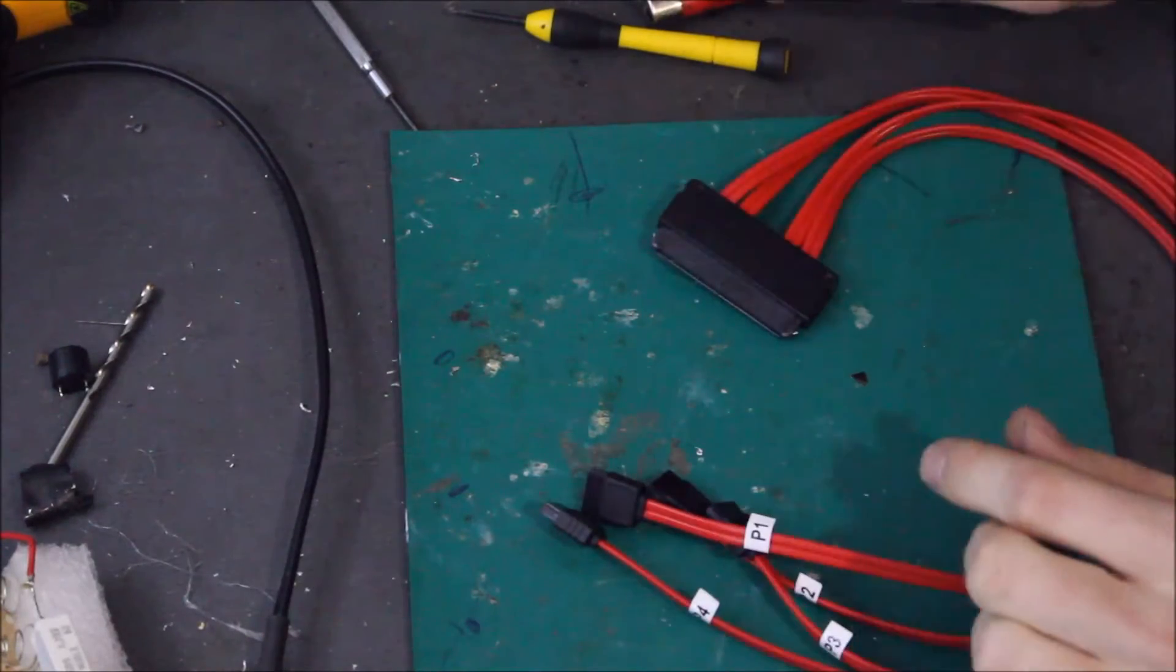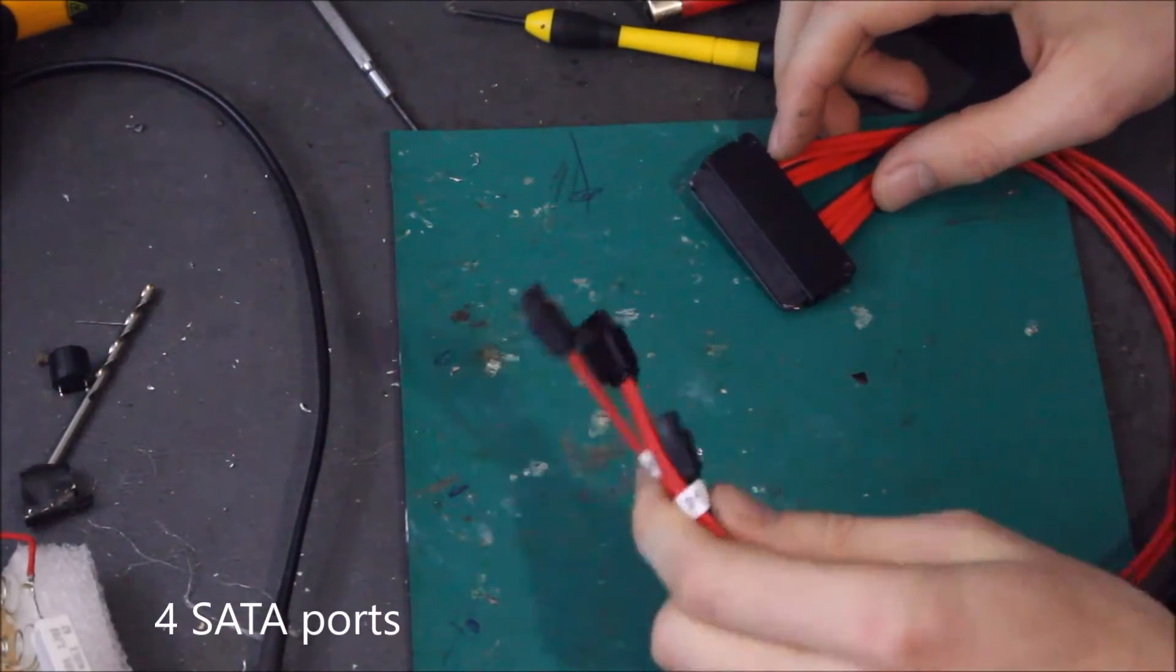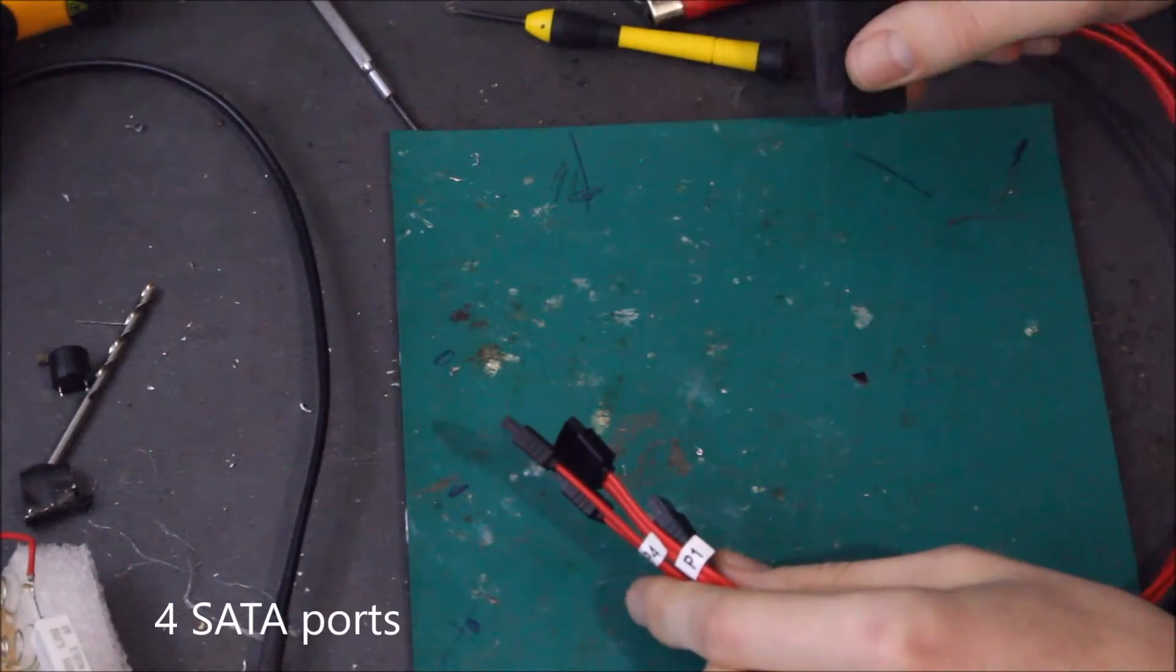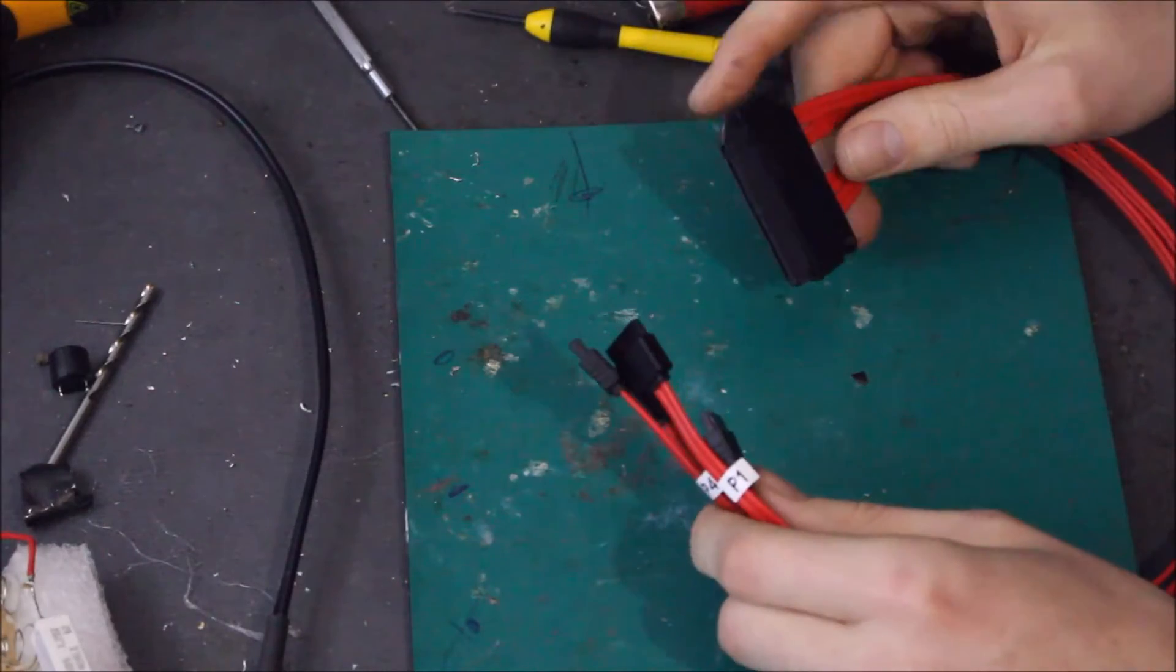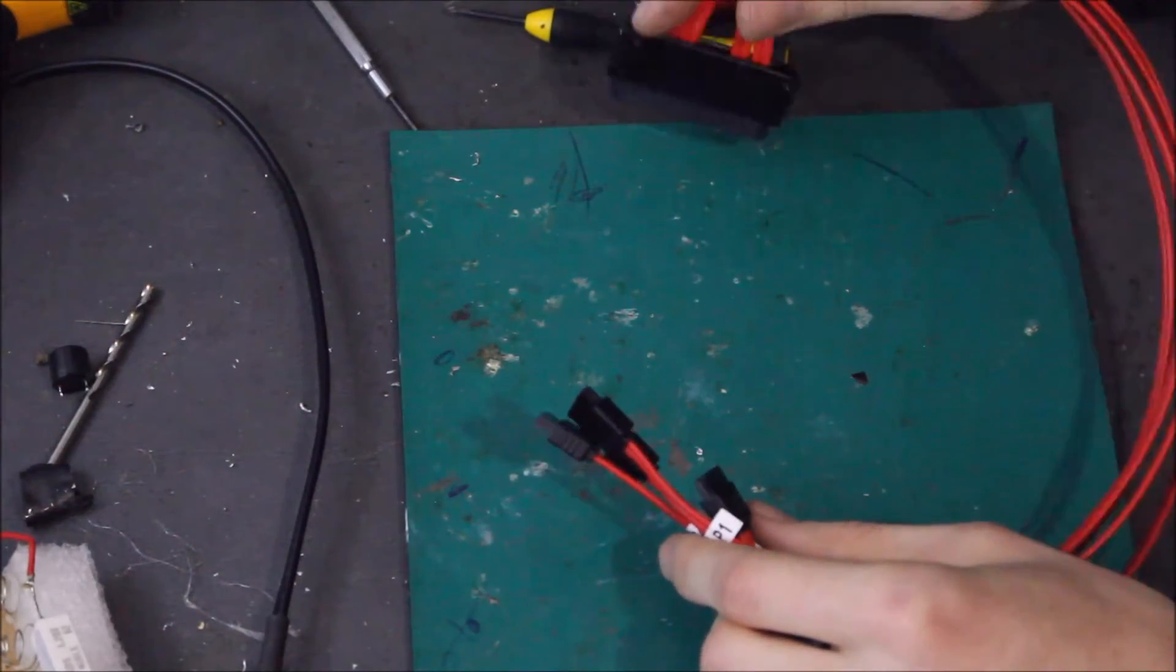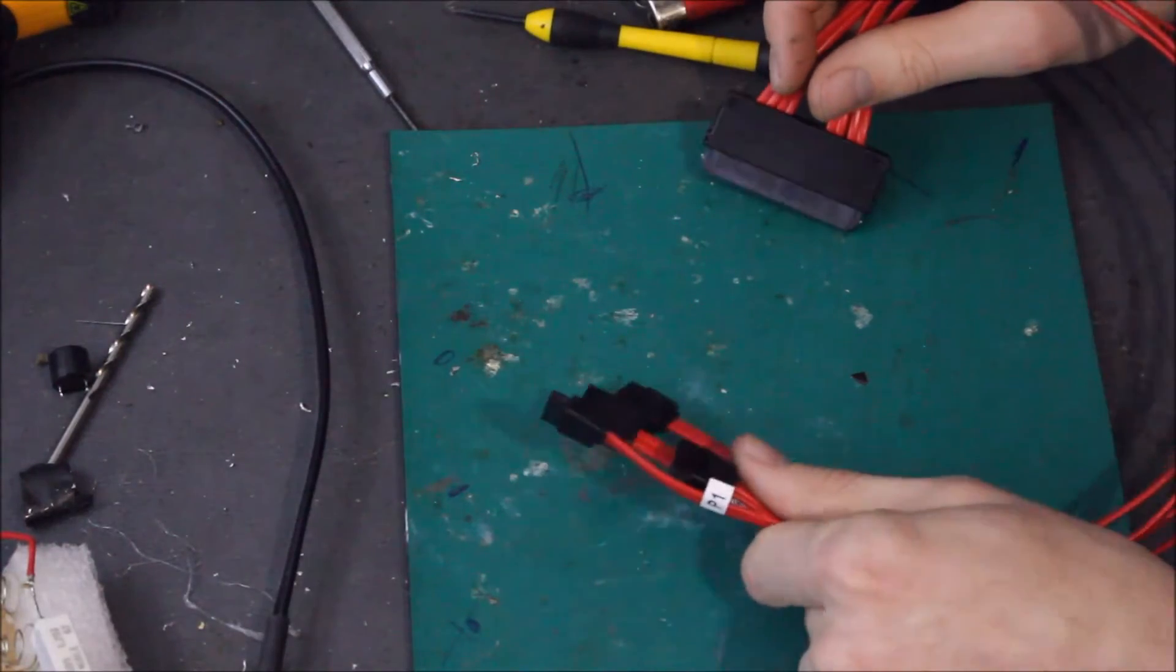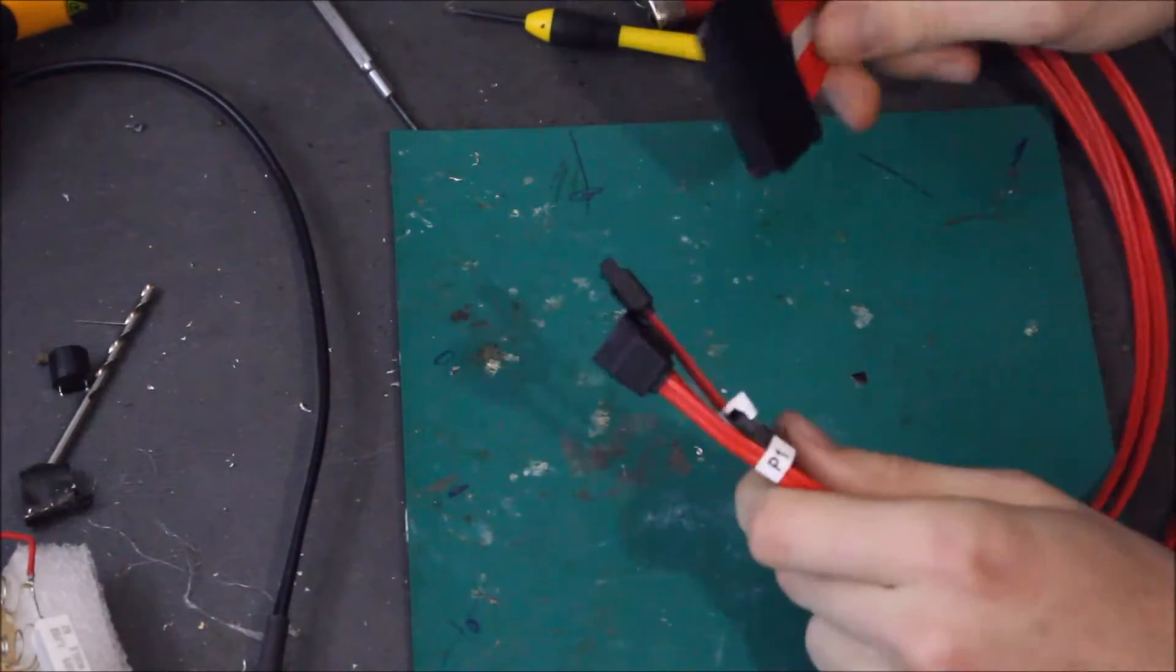The one I currently have is to go from SATA ports on, say, a motherboard into a backplane of some description that uses this connector. But what I'm trying to use it for is to put this onto a RAID card and run four hard drives off it, which I can't because it's wired the wrong way.